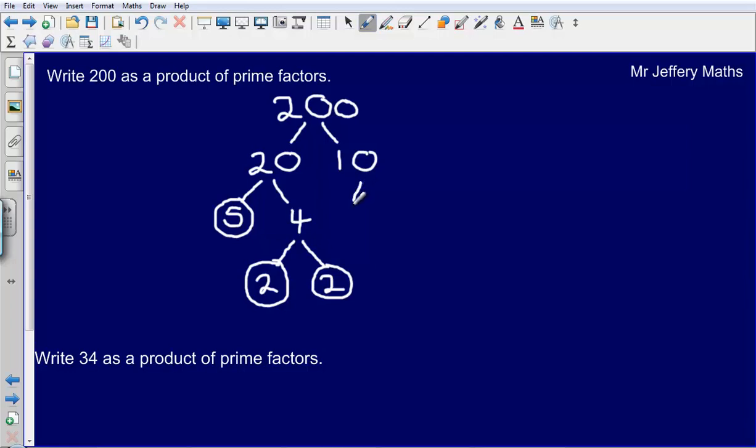And then lastly, how can I make 10 by multiplying two numbers together? The only way that I can do that is 2 multiplied by 5, so 2 times by 5. Once all the avenues are closed, so once I've circled all numbers at the bottom of my factor tree, that's my final answer.